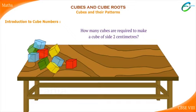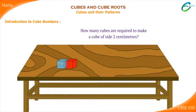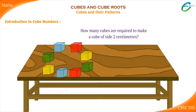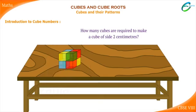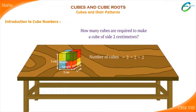Let us join the cubes now. We can see that by joining 8 cubes we can make the required cube. Observe that for the cube of side 2 cm, length into breadth into height is equal to 2 into 2 into 2. That is, we multiply 2 by itself 3 times to get 8.